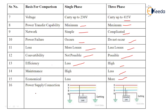Looking at the power supply connection: in single phase it connects R (red), N (neutral), and earthing to the consumer unit. In three phase, it is connected to R (red — phase one), Y (yellow — phase two), B (blue — phase three), plus neutral and earthing. This makes three phase quite complex with five connections: the three phase wires R, Y, B, the neutral, and the earthing.